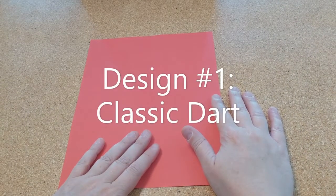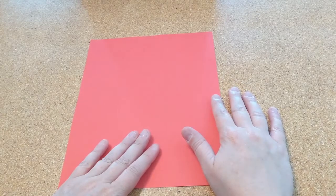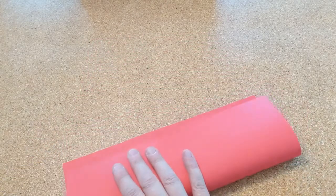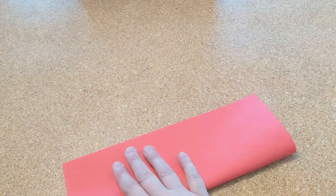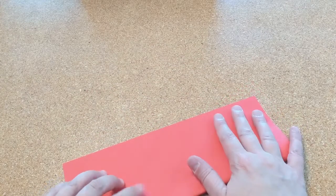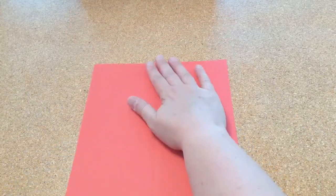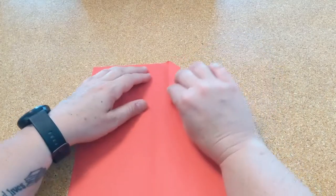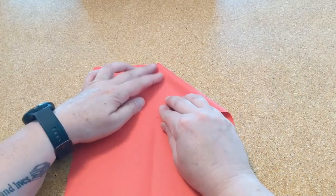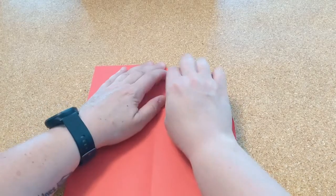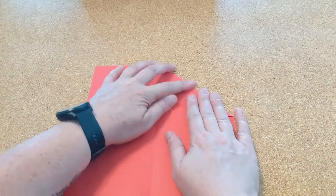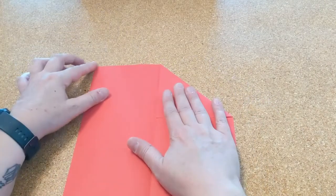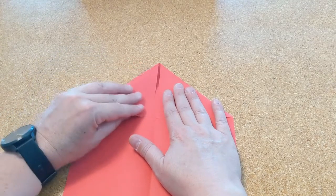For this first design you're going to fold your paper hot dog style. Then you're going to lay your paper out in front of you portrait style. Then you're going to fold the corner, the top right corner, into the crease, lining up the edges, and then you're going to do the same thing with the left side.